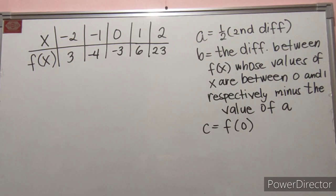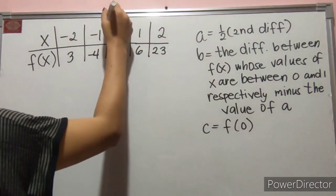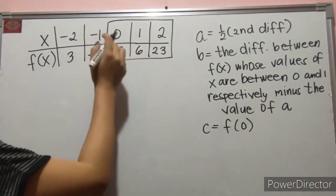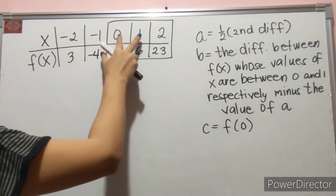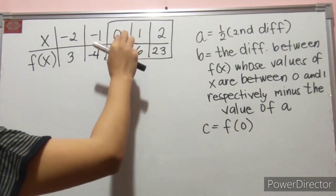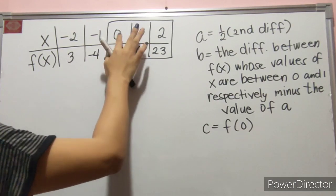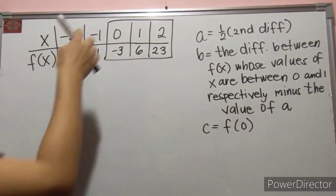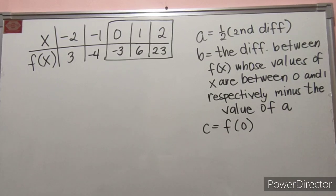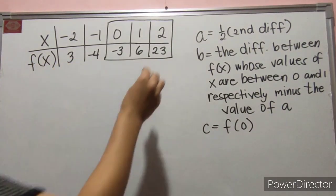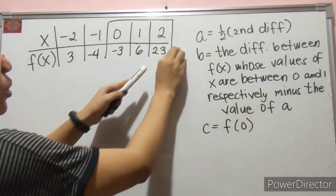So again, we need to find the first and second difference. Ang ginagawa ko dyan ay ang ginagamit ko lang yung merong 0, 1, and 2, or pwede din namang negative 1, 0, and 1. Basta dapat, it's either nasa huling dalawa — nasa huling dalawa yung 0, 1 — or nasa unahan yung 0, 1. So, pwede ito yung gagamitin, or which is ito. Napag-isip-isip ko, yung negative 1, 0, 1, 2 na lang yung gagamitin ko. Kasi, masyadong mataas to yung 2, 2, 3.